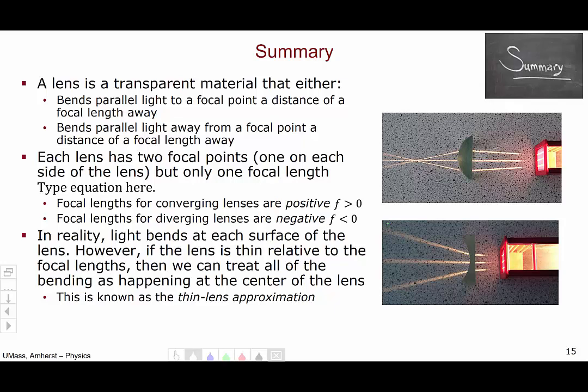So in summary, a lens is a transparent material that either bends parallel light towards a focal point in the case of a converging lens or bends the light away in such a way that it appears to originate from a point in the case of a diverging lens. Each lens has two focal points, one on each side of the lens, because I can, of course, send the light through the lens either from the left or from the right. And we've seen examples of light traveling both ways in this video. So there are two focal points, one on each side.